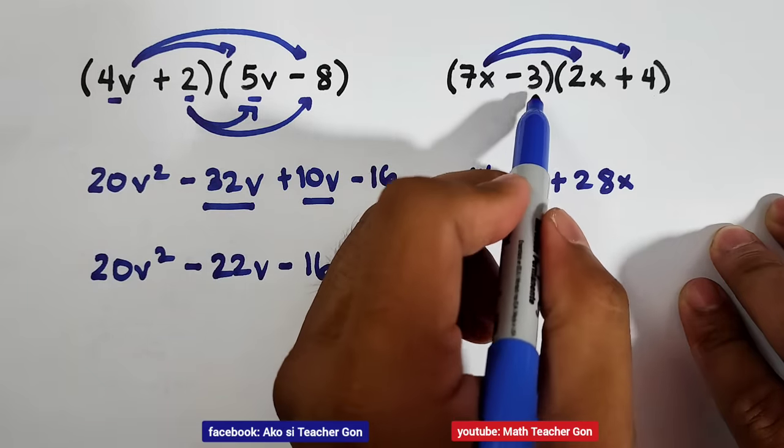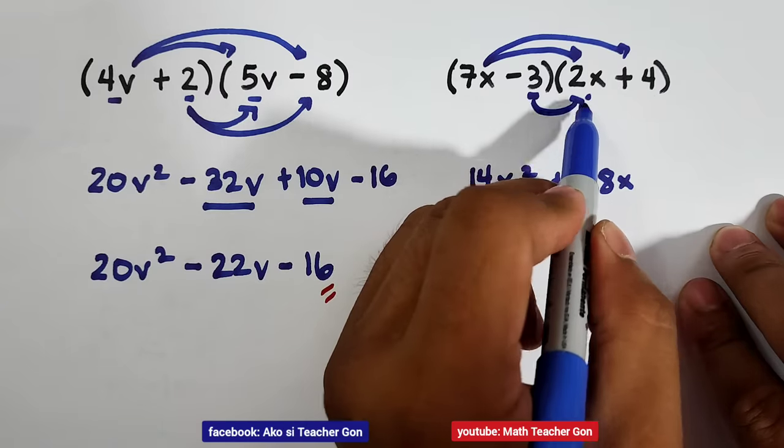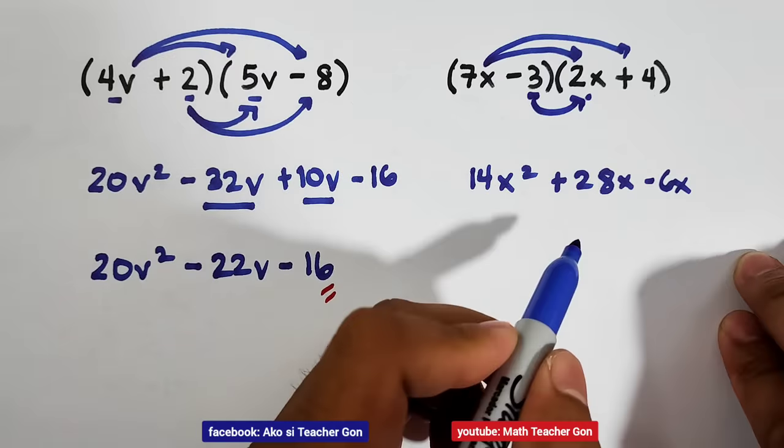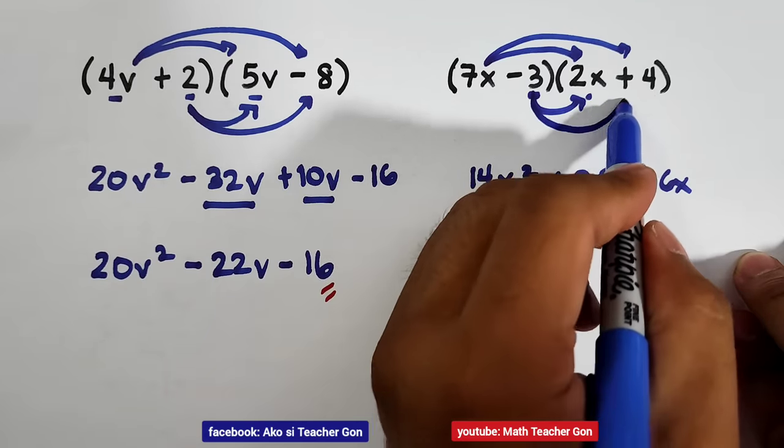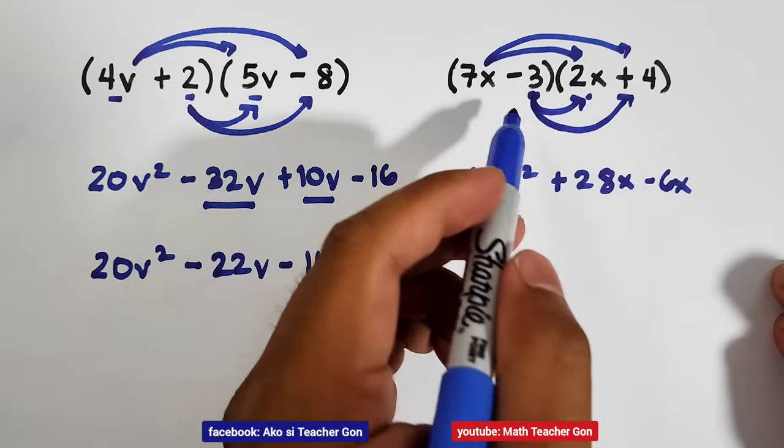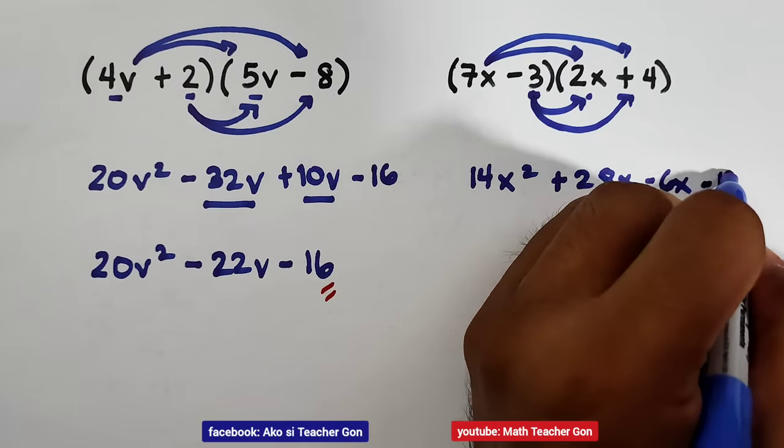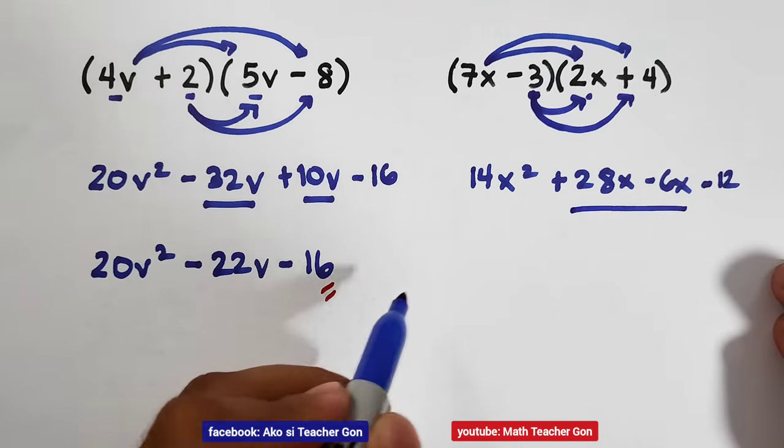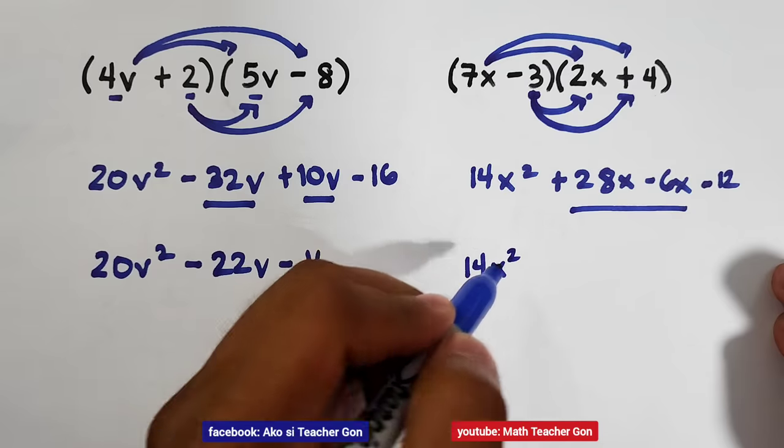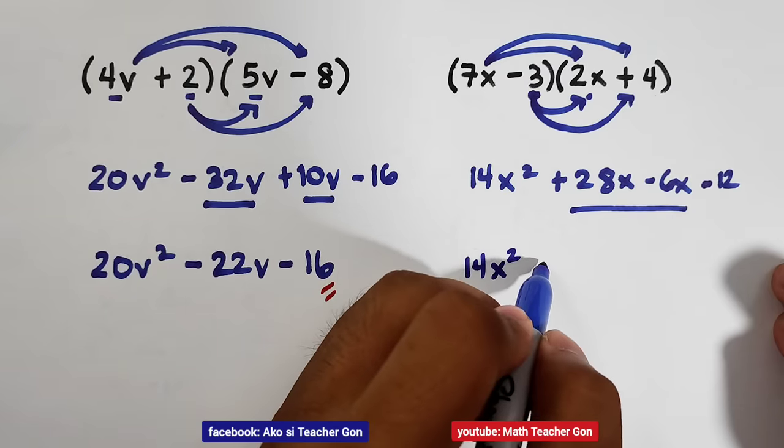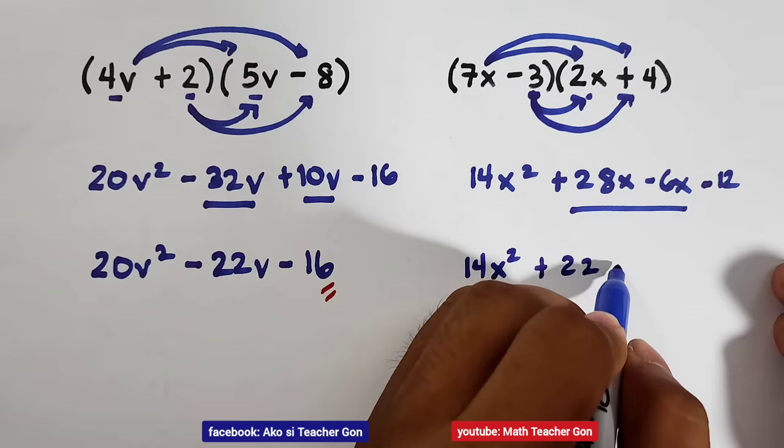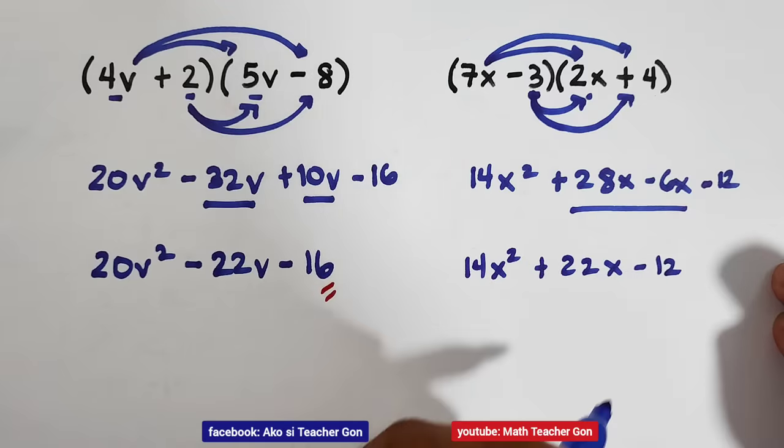Next, negative 3, 2x. That is negative 6x. Last one, negative 3 plus 4. Since different signs, that is negative or minus 12. Combine these middle terms. We have 14x squared plus 22x then minus 12.